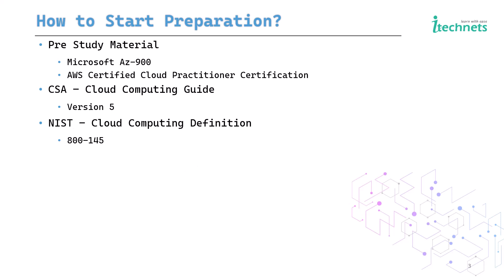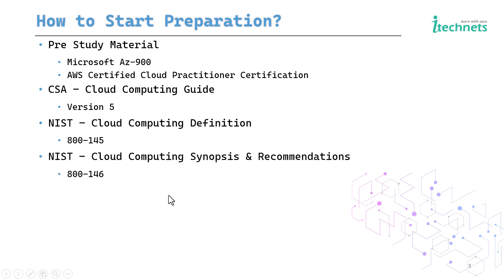NIST 800-145 is a very limited number of pages but covers the definition of cloud computing, the different types of clouds used in the environment, and the different service models. You can refer to this document as part of your CCSP preparation.